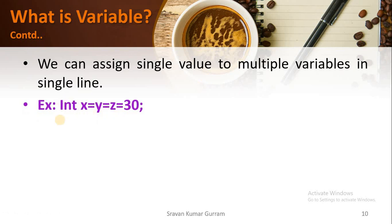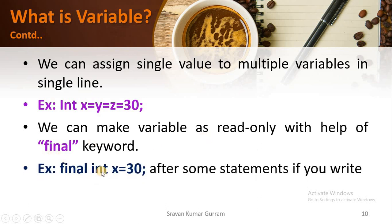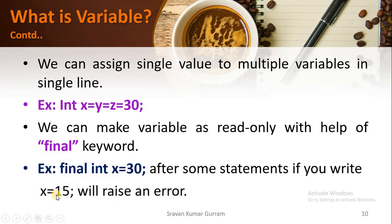We can assign a single value to multiple variables in a single line using a statement like: data type, variable names x = y = z = 30. Now the value 30 will be stored in all three variables. Also, if you want to prevent changes and make a variable value read-only, we can do that by using the keyword 'final'. For example: final int x = 30. Even if you try to change the value of x, it will raise an error because we are using the keyword final — the value of x is fixed and we are not allowed to change it.